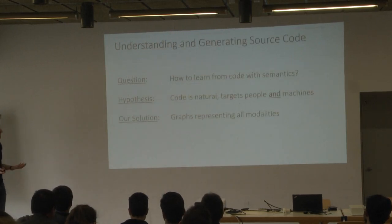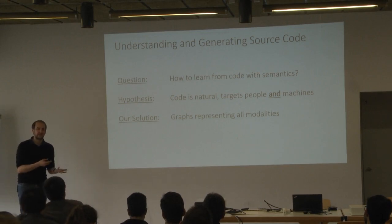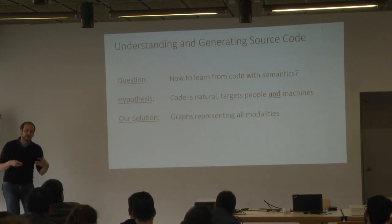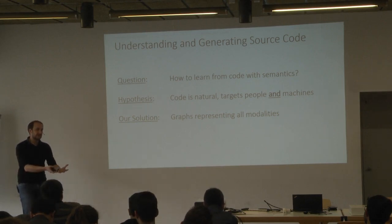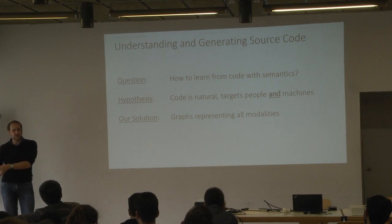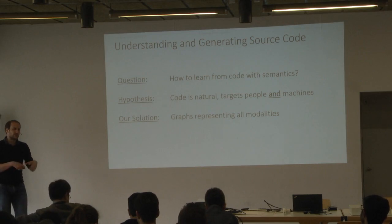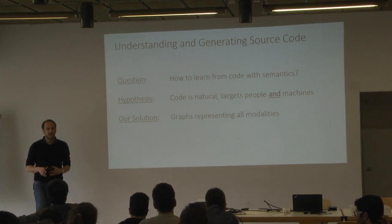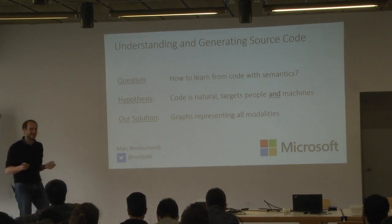To close: the really interesting question I've been studying is how to actually learn from code that has semantics — or any object that has semantics — using deep learning. The idea is leveraging that code has two audiences: it tries to tell a machine what to do, and it tries to tell you in six weeks what the hell you did. The solution we found is to marry the deep learning component that can deal with natural language with semantics by using these graphs. We are hiring. Thanks for the attention.